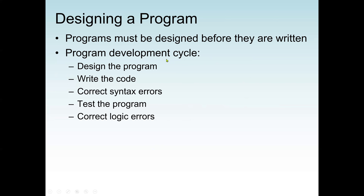The program development cycle normally starts with designing the program first. After we design the program, we write the code — that's implementing it. After we implement the code, we test it. We run it, and if there's any error, there are normally two types: syntax errors and logic errors.